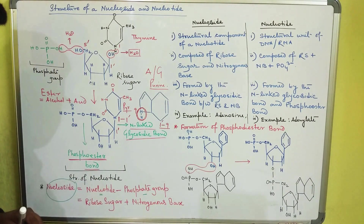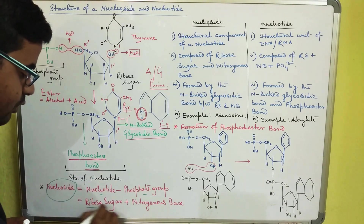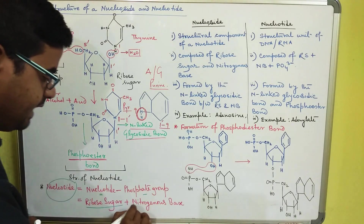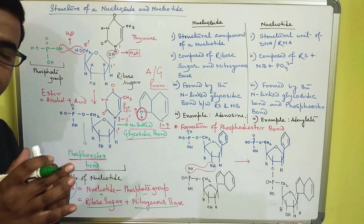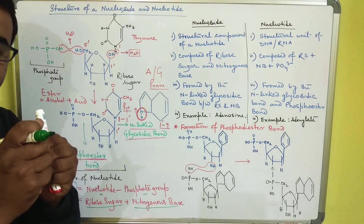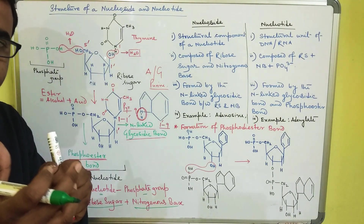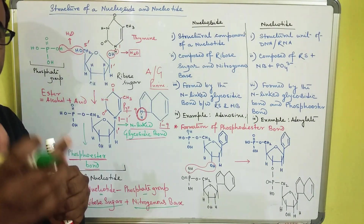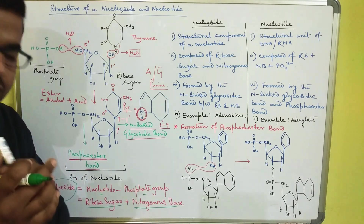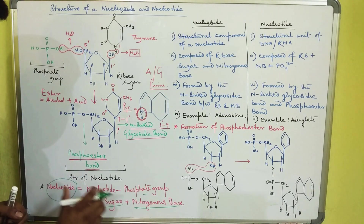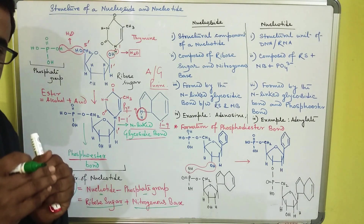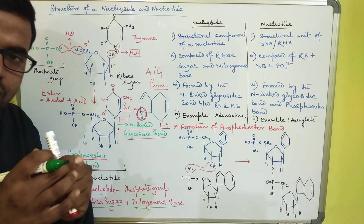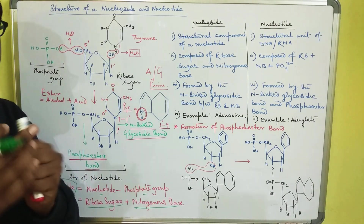A nucleoside is a ribose sugar bound to a nitrogenous base. When a ribose sugar is bound with a nitrogenous base with the help of the N-linked glycosidic bond, it forms a nucleoside. When a nucleoside is attached to a phosphate group, it forms a nucleotide.